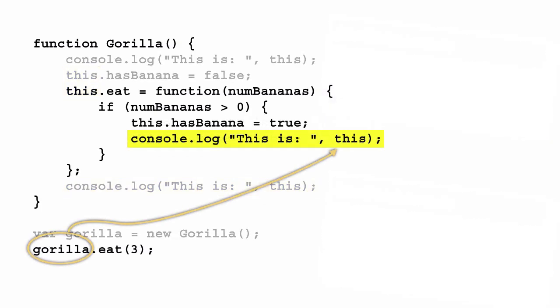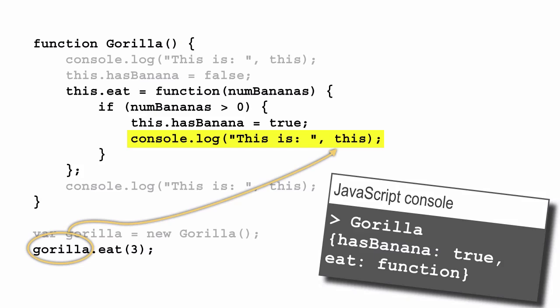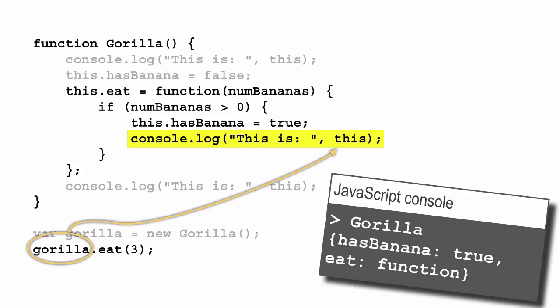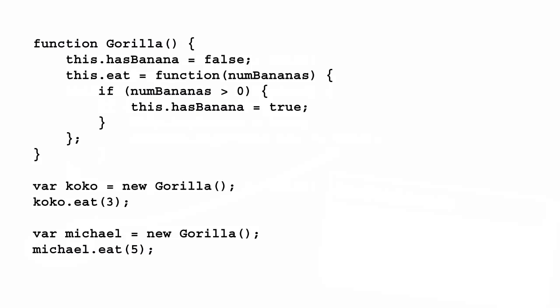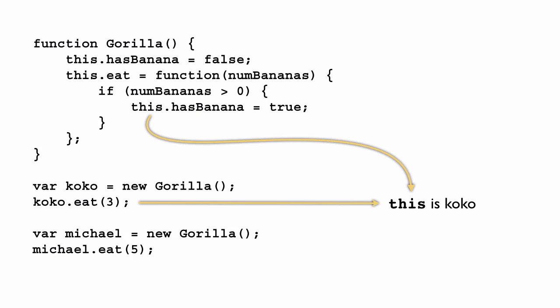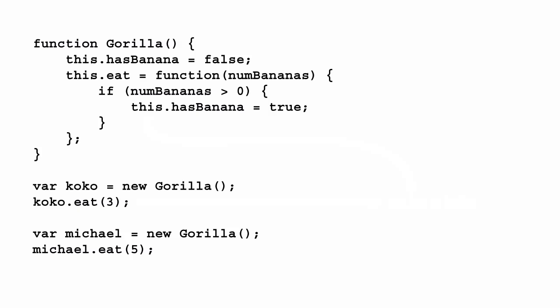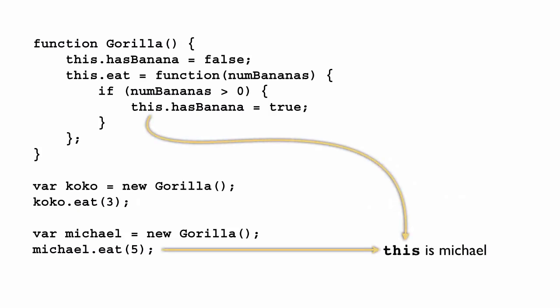Just like before with our gorilla object literal, the value of `this` in the `eat` method is determined when we call the method. Here the value of `this` is set to the gorilla object we just made. We can use our gorilla constructor to make more than one gorilla — here we're creating two different gorillas, Coco and Michael. The value of `this` is set to the object whose `eat` method is called. So to keep track of the value of `this` in object methods, you need to know which object was used to call that method.